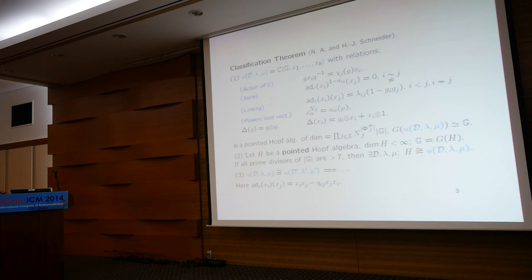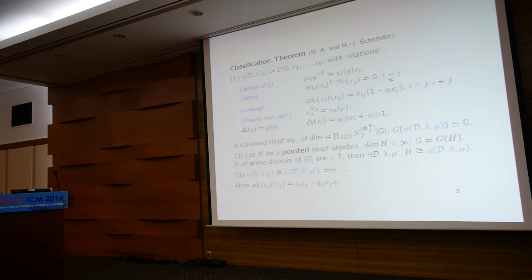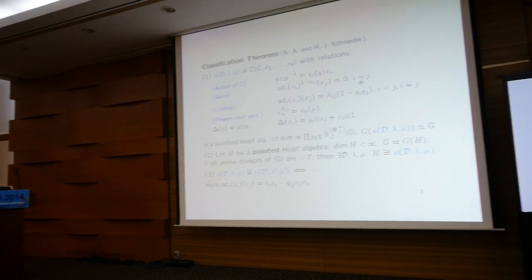This is a pointed Hopf algebra. We can compute explicitly the dimension of this algebra and we know what the group-like elements are. Conversely, if you have any pointed finite-dimensional Hopf algebra such that the group of group-like elements is a finite abelian group G, and if all prime divisors of the order of G are bigger than seven, then there exists data D, lambda, mu such that H is of this form. We can also describe when two algebras attached to different data are isomorphic. This is the main result.